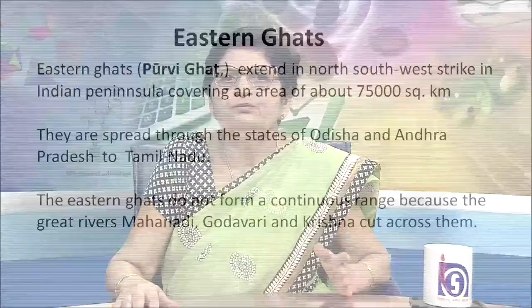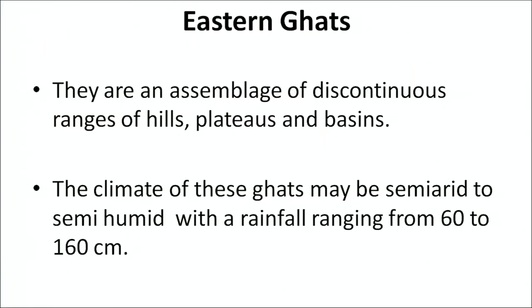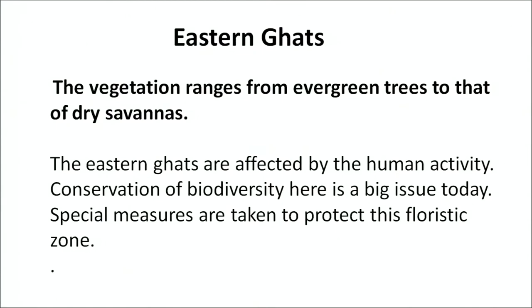The Eastern Ghats, also known as Purvi Ghats, extend from north to southwest across the Indian peninsula, covering approximately 75,000 square kilometres. They spread through the states of Odisha, Andhra Pradesh and Tamil Nadu. The Eastern Ghats do not form a continuous range because great rivers like Mahanadi, Godavari and Krishna cut across them, making them an assemblage of discontinuous ranges of hills, patches and basins. The climate may be semi-arid or semi-humid with 60 to 160 centimeters of rainfall. The vegetation ranges from evergreen trees to dry savannas. Conservation of biodiversity here is a major issue, and special measures are taken to protect the floristic zones.